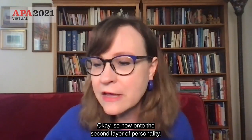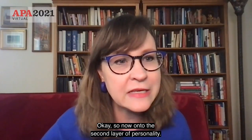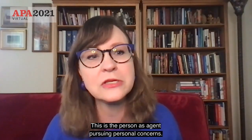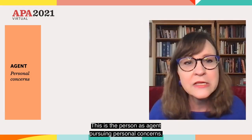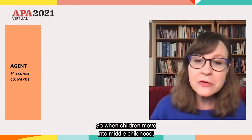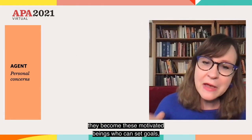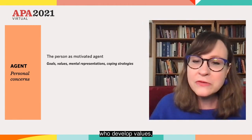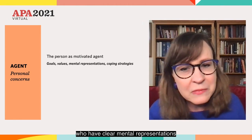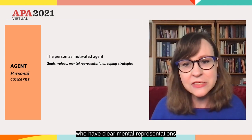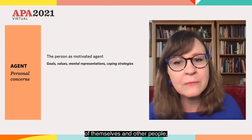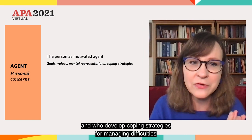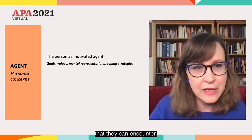So now on to the second layer of personality — the person as agent pursuing personal concerns. When children move into middle childhood, they become these motivated beings who can set goals, develop values, have clear mental representations of themselves and other people, and develop coping strategies for managing difficulties they can encounter.